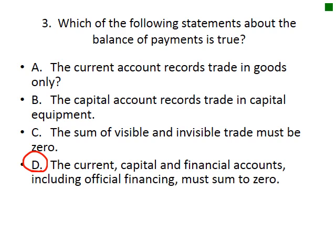Which of the following statements about the balance of payments is true? The current account records trade in goods only — that's not true; it's trade in goods and services and investment flows. The capital account records trade in capital equipment — no, capital equipment is part of the current account. The sum of visible and invisible trade must be zero — no, there's no reason for that. The correct answer is that the capital and financial accounts including official financing or net errors and omissions must sum to zero.